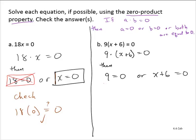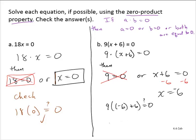Can 9 ever equal 0? No, it cannot. Can x plus 6 ever equal 0? Well, if we subtract 6 from both sides, then x would equal negative 6. Let's check our work: is 9 times (negative 6 plus 6) equal to 0? Following the order of operations, that gives us 9 times 0, which equals 0. So x equals negative 6 is a solution of the equation.